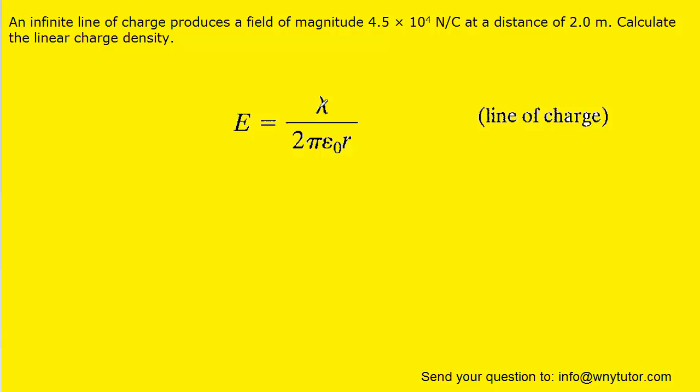We have lambda, which is the linear charge density, and is in fact what we're looking for. Pi, of course, is a constant, as is epsilon, and then r is the distance away from this infinite line of charge.